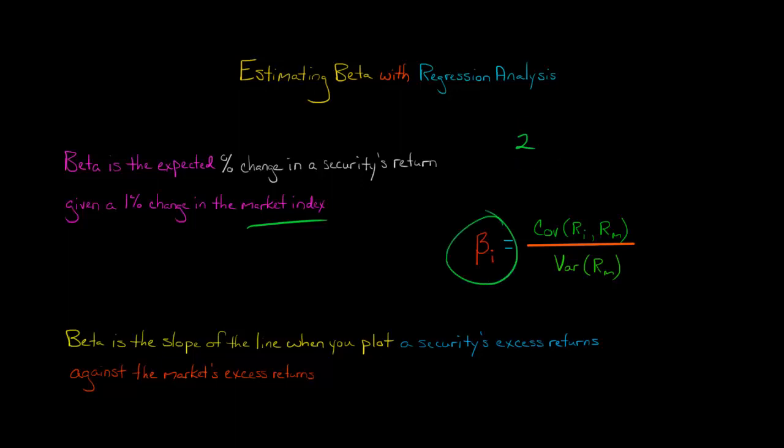You can calculate the beta of any stock by taking the covariance of that stock's return—say returns for firm I, like Walmart—and then take the returns of the market index, let's say the S&P 500. Take the covariance of that and divide it by the variance of the returns of the market index. That will give you the beta for firm I.